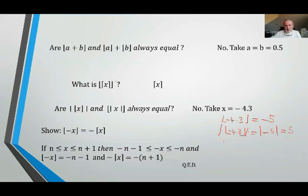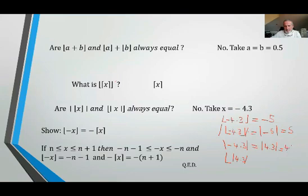Starting instead with the absolute value of negative 4.3 gives 4.3, and the floor of 4.3 is 4. So the absolute value of the floor of negative 4.3 is 5, while the floor of the absolute value of negative 4.3 is 4. They are not equal.